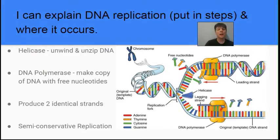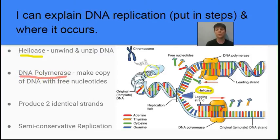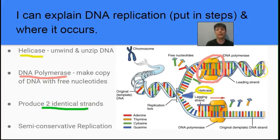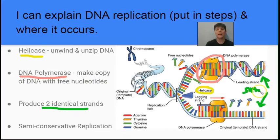Our next learning target is to explain the process of DNA replication — the steps of this process and where it occurs. In eukaryotic cells, this is occurring in the nucleus because this is the location of the chromosomes. There are some important enzymes involved. Helicase unwinds and unzips the DNA — I've circled that in yellow. DNA polymerase, highlighted in pink, is the enzyme that copies the DNA. The copying process produces two strands which are identical, because of those complementary base pairing rules.